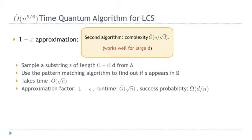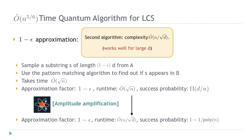The success probability of this approach is low — we know the probability that the algorithm works is at least ε·D/n = Ω(D/n). To improve the success probability, we apply amplitude amplification, which brings the probability close to 1 but increases the runtime. Instead of √n, we now have runtime n / √D, and the approximation factor is still (1−ε).